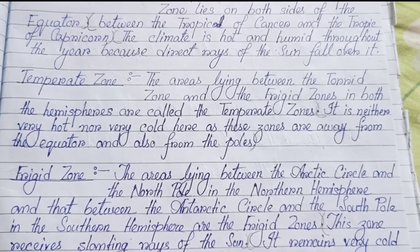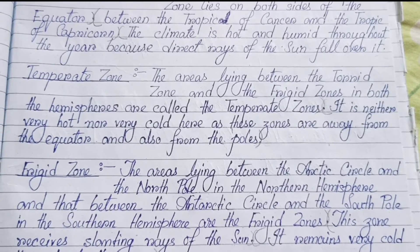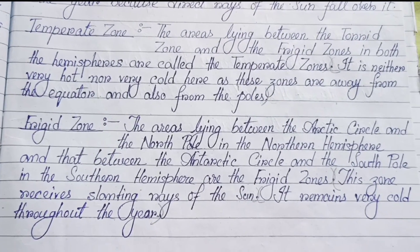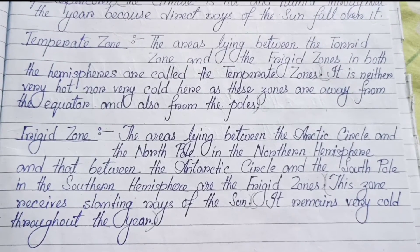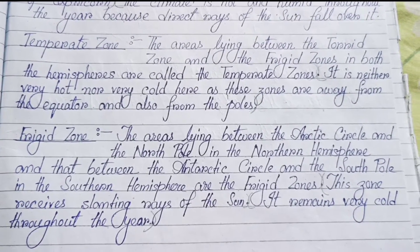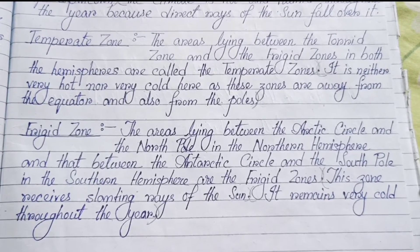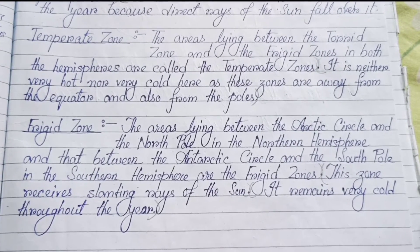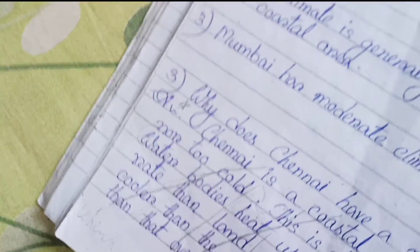Temperate zone: the areas lying between the torrid zone and the frigid zones in both the hemispheres are called the temperate zones. It is neither very hot nor very cold here, as these zones are away from both the equator and the poles. Frigid zone: the areas lying between the Arctic Circle and the North Pole in the northern hemisphere, and between the Antarctic Circle and the South Pole in the southern hemisphere, are the frigid zones. This zone receives slanting rays of the sun and remains very cold throughout the year.